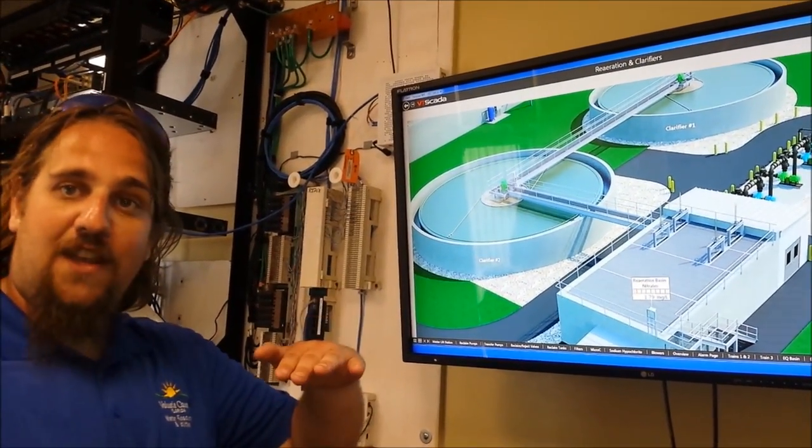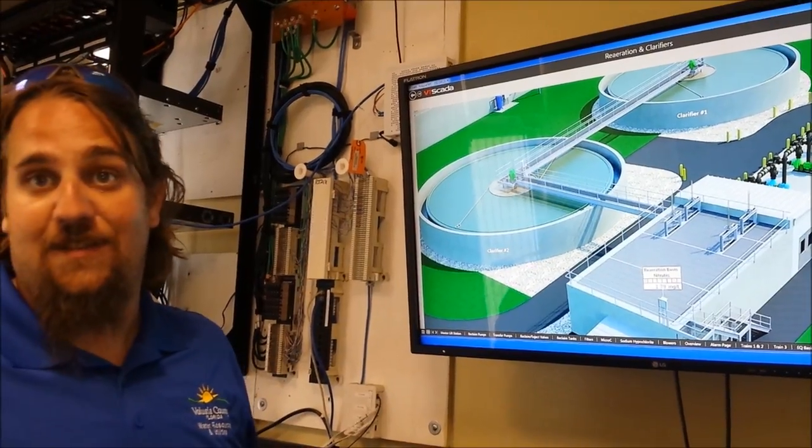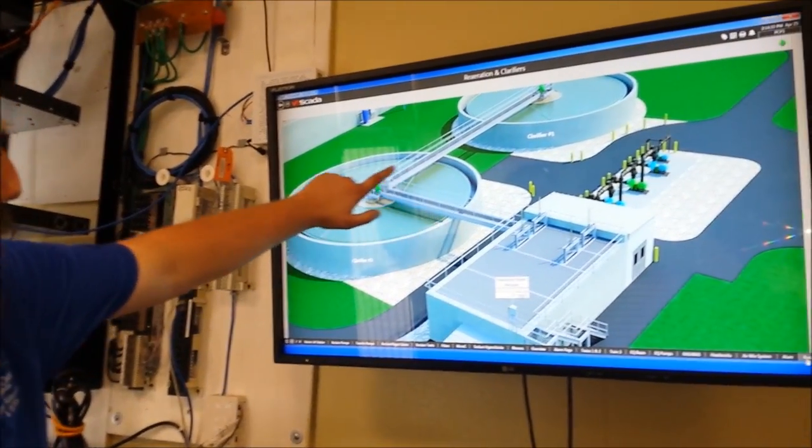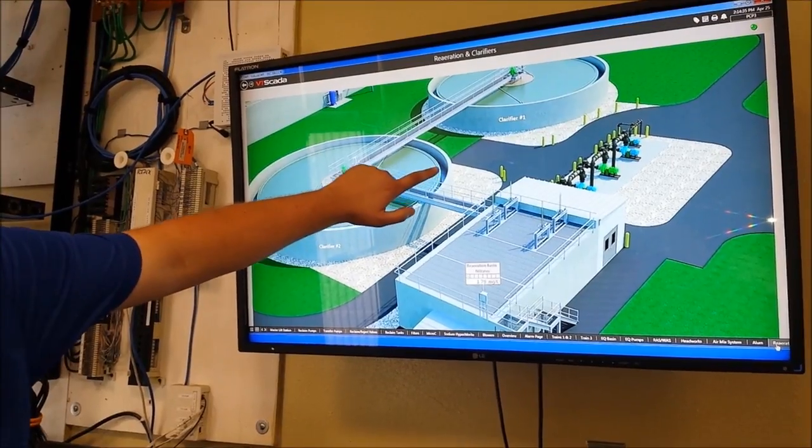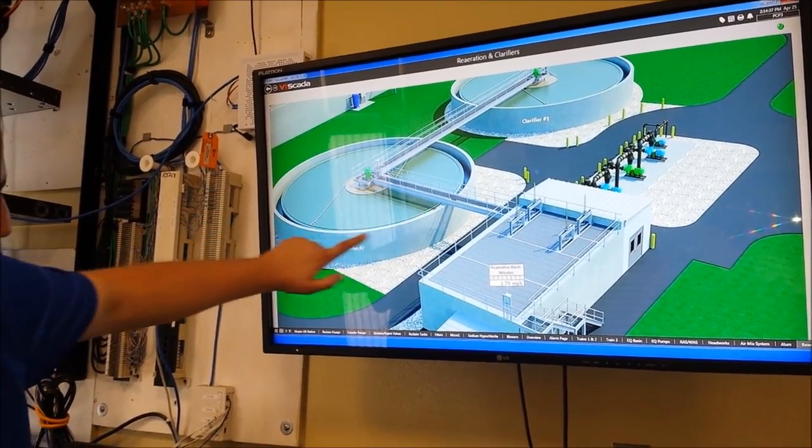Basically, the smaller blanket you have, the better it is, the better settling you have. And then you have crystal clear water that flows over these weirs here and flows into a trough.